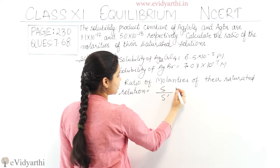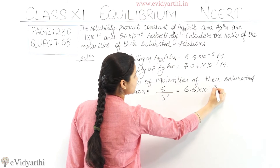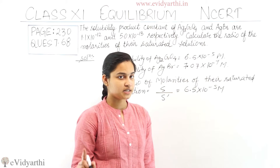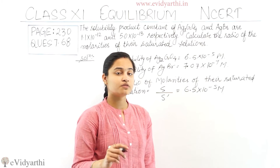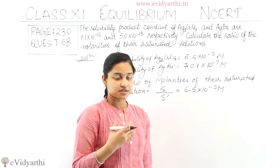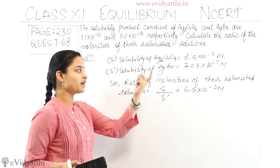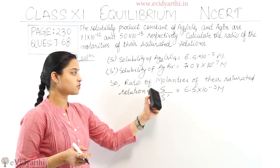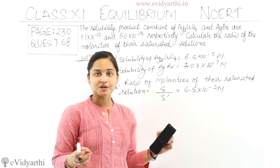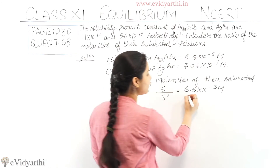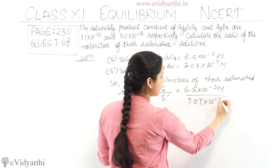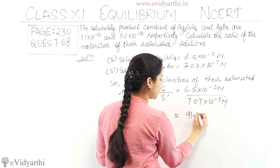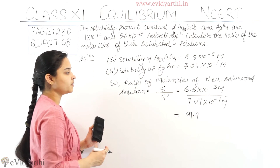The ratio of molarities of their saturated solutions is S/S', which equals 6.5×10⁻⁵ divided by 7.07×10⁻⁷. Since the unit of solubility is mol per liter, solubility equals the molarity of these compounds — Ag₂CrO₄ and AgBr. When we solve this, the answer is 91.9.